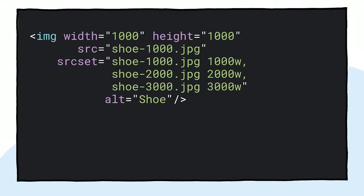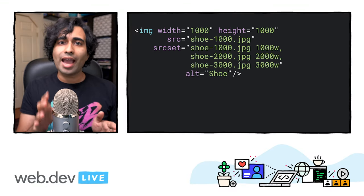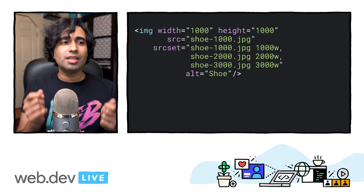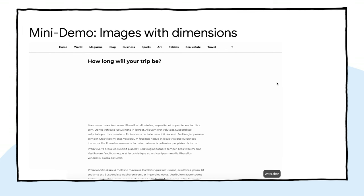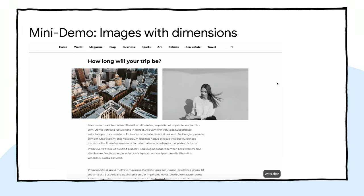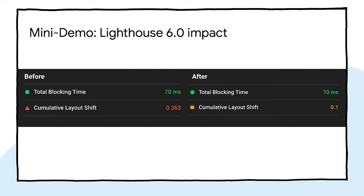This also works well with responsive images. With srcset, you're generally defining images for the browser to select between. To make sure that your image width and height attributes can be set, just make sure each image uses the same aspect ratio. Here's that demo with width and height attributes added — in a modern browser you won't see any layout shifts, and the user gets a much more pleasant experience. Set those width and height attributes as much as you can.